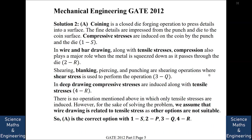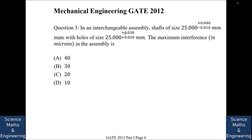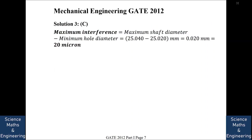In an interchangeable assembly, the shaft has a base diameter of 25 mm with tolerances of +0.040 and −0.040 mm, and the hole has a base size of 25 mm with tolerances of +0.030 and +0.020 mm. For maximum interference, we need the maximum shaft size and minimum hole size. Maximum shaft diameter is 25.040 mm and minimum hole diameter is 25.020 mm, giving a maximum interference of 0.020 mm, which is 20 microns.